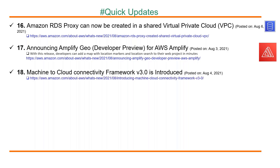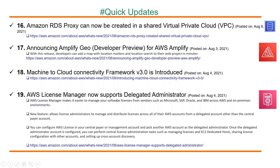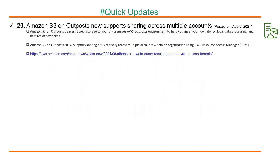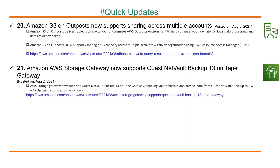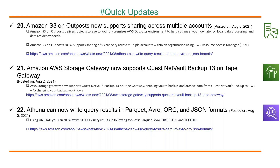Mission to Cloud Connectivity Framework version 3.0 is introduced. AWS License Manager now supports delegated administrator, allowing license administrators to manage and distribute licenses across all their AWS accounts from a delegated account other than the central payer account. Amazon S3 on Outposts now supports sharing across multiple accounts. AWS Storage Gateway now supports Quest NetVault Backup 13 on tape gateway, enabling you to back up and archive data from Quest NetVault Backup to AWS without changing any of your backup workflows. Finally, Amazon Athena now lets you download query results in different formats such as Parquet, Avro, ORC, and JSON.